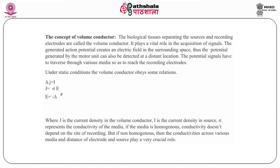Under static conditions, the volume conductor obeys certain relations: delta J equals I; J equals sigma E; and E equals minus delta pi. Here J is the current density in the volume conductor, I is the current density in the source, and sigma represents the conductivity of the media. If the media is homogeneous, conductivity does not depend upon the site of recording. But if the media is non-homogeneous, then the conductivity across various media and the distance of the electrode from the source play a very crucial role.